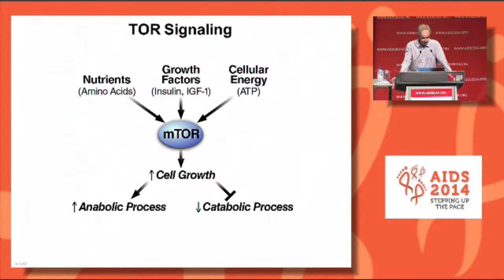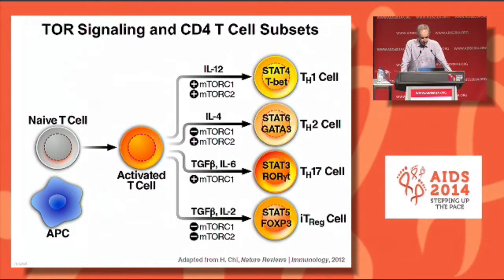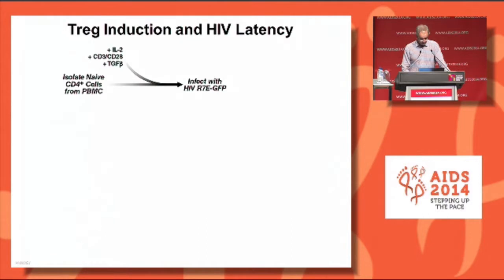When TOR is activated by nutrients, growth factors, and cellular energy, it activates cell growth by increasing anabolic processes and decreasing catabolic processes. TOR signaling plays a key role in CD4 T cell subset differentiation. What I'm showing here is what we know about unique CD4 T cell subsets — TH1, TH2, TH17, and Tregs — and the fact that many of these subsets' differentiation appears dependent on both TGF-beta and the TOR proteins, suggesting that unique CD4 subset differentiation might be associated with the presence of latency.